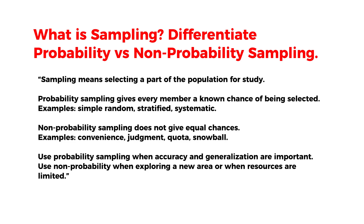Non-probability sampling does not give equal chances of selection. Examples include convenience, judgment, quota, and snowball sampling. Use probability sampling when accuracy and generalization are important. Use non-probability sampling when exploring a new area or when resources are limited.